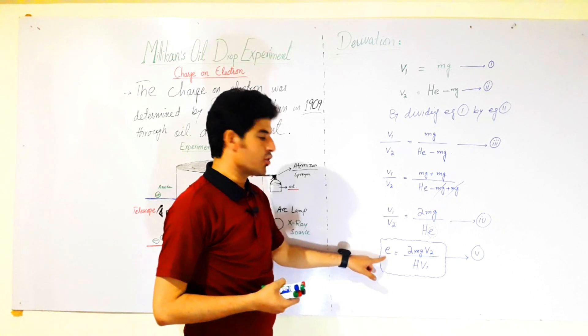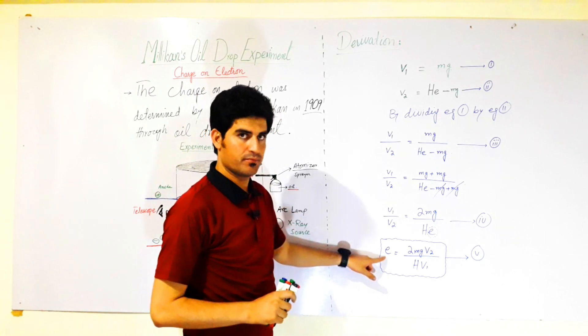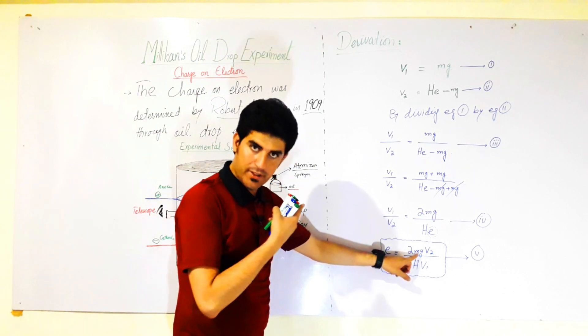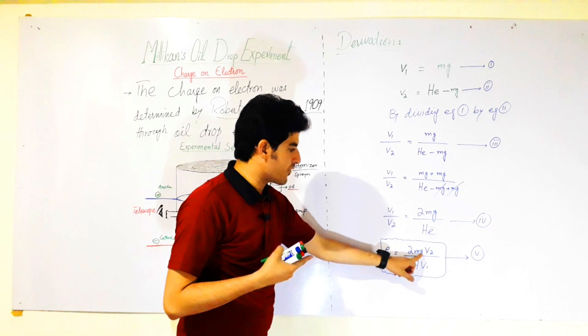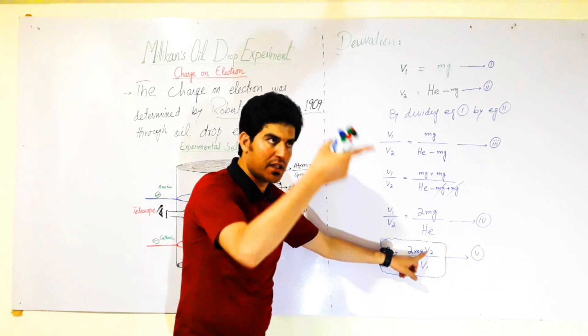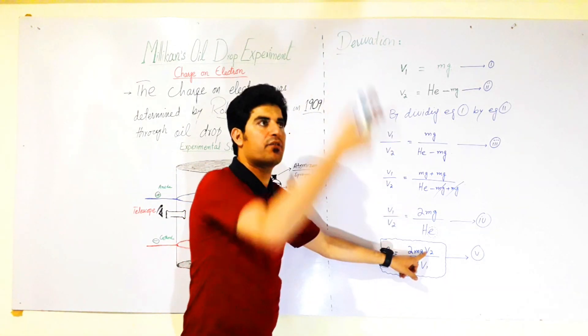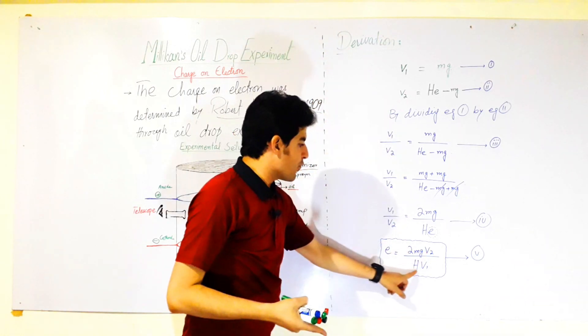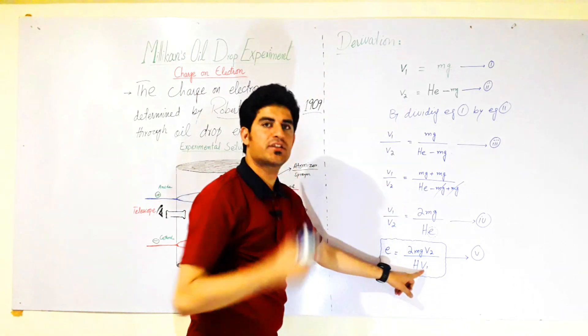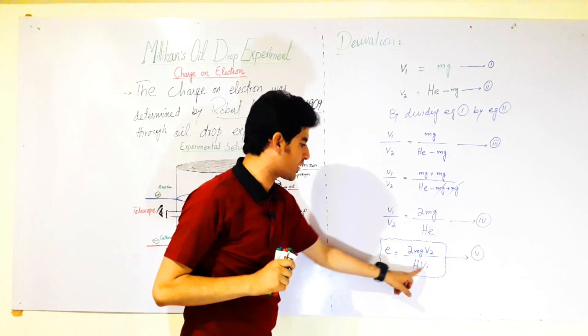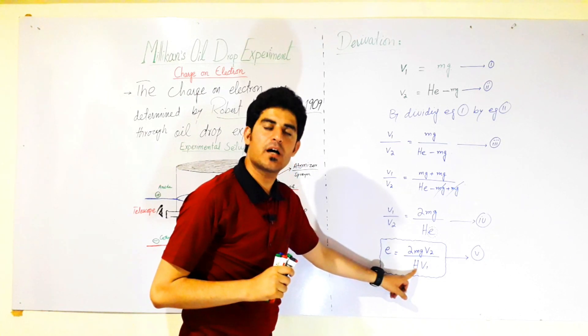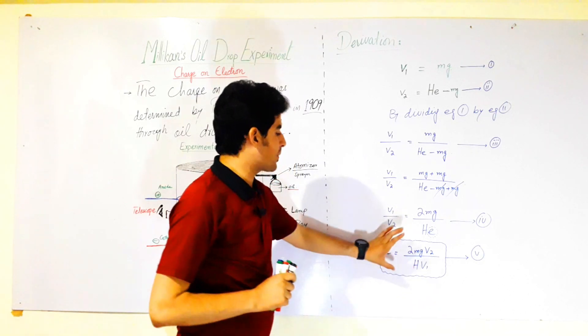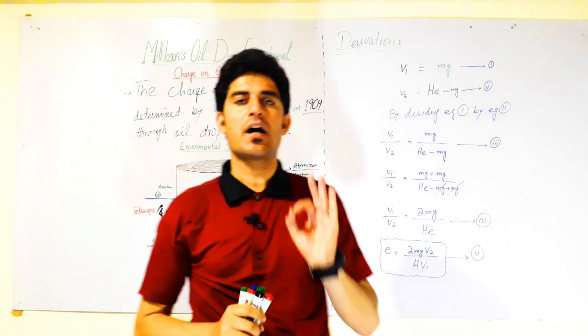By this equation you can calculate the charge on electron. You just need the mass of that droplet, the gravitational value, v2 with which the droplet moves upward in the electric field, v1 with which it moves downward, and the strength of the electric field you applied. Using these values, the charge on the electron will be determined.